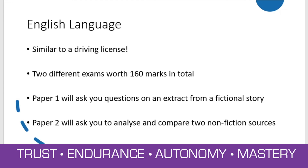To get this GCSE, you will need to sit two exams which together are worth 160 marks in total. Paper one will ask you questions on an extract from a fictional story — something you're very familiar with already, like the Dracula extracts you've read. Paper two will ask you to analyse and compare two non-fiction sources, similar to something you've already done this year when you were looking at the extracts around technology.